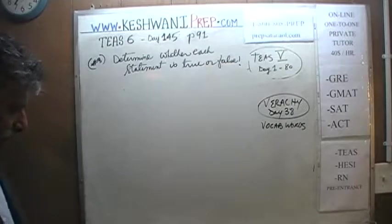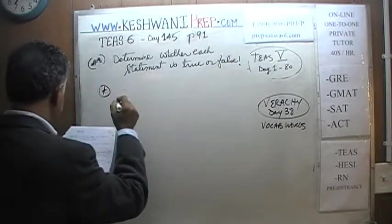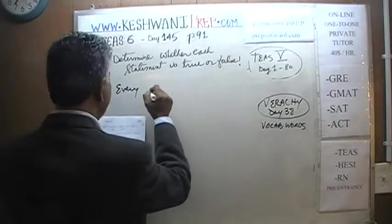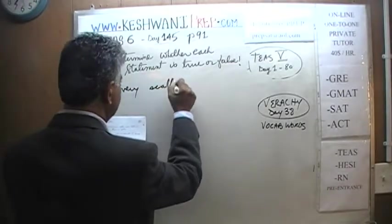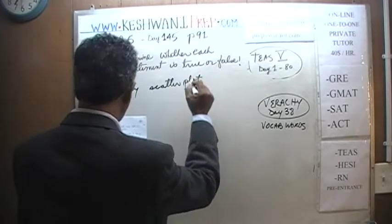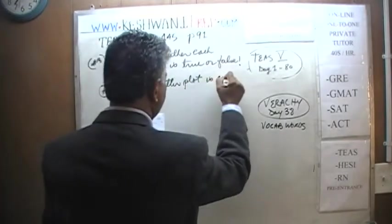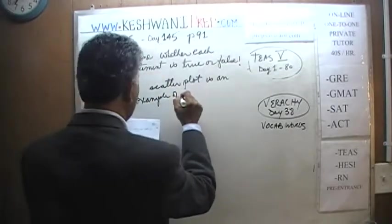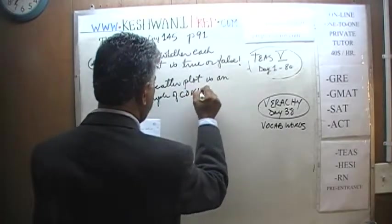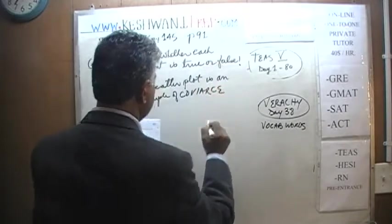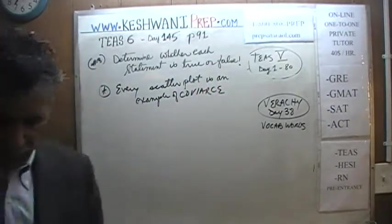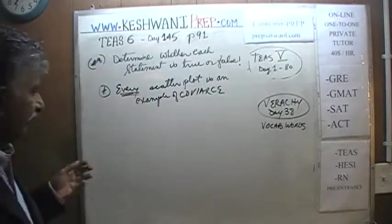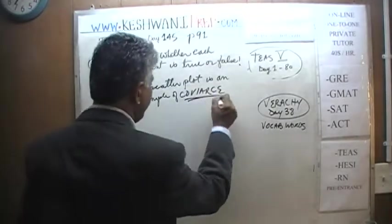Statement A says: every scatter plot is an example of covariance. Let's find out, shall we? Covariance simply means they vary together.